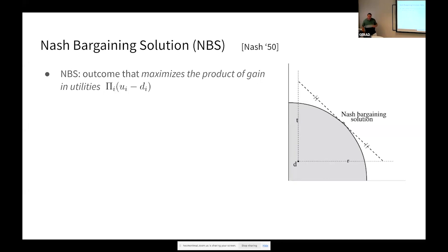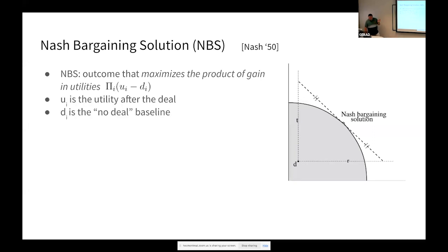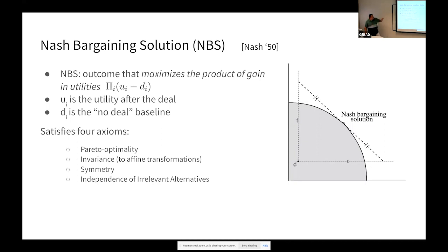This is called the Nash bargaining solution — a really basic first concept in bargaining theory. What does it say? If you have a number of outcomes, the Nash bargaining solution wants you to pick the outcome that maximizes a product over each player's utility minus their disagreement utility. If there's no deal, the D value is the no-deal baseline. You multiply this over all agents, and whatever outcome maximizes this product is the one you should look for. It satisfies four axioms — this is one of Nash's seminal papers from 1950, the same year he published the Nash equilibrium paper. Pareto optimality is the one I prefer most.